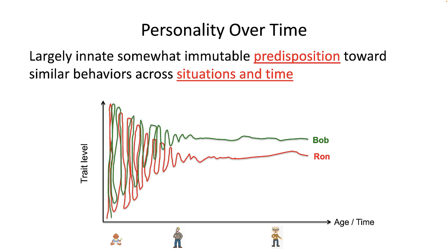We see that in the early years of one's life there is great variability in trait level. For example, sometimes we are completely agreeable infants and sometimes we are totally disagreeable little tantrum throwers who want what we want when we want it. As we age, our personality tends to settle in on an amount of trait that we possess or display to others. By the time we are around 30 years old, our personalities tend to crystallize around a certain trait level. So what is that trait level?